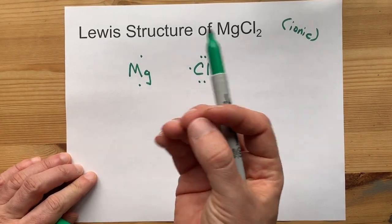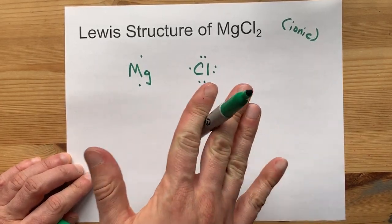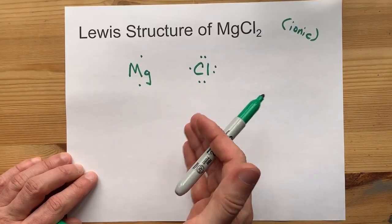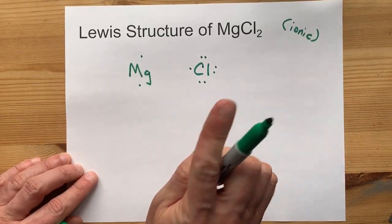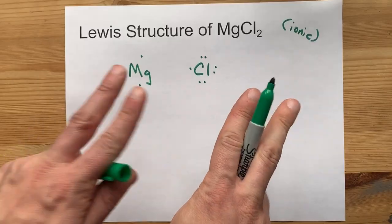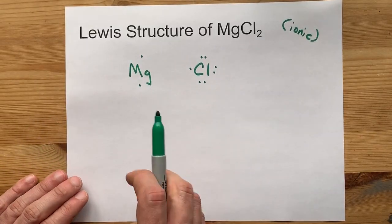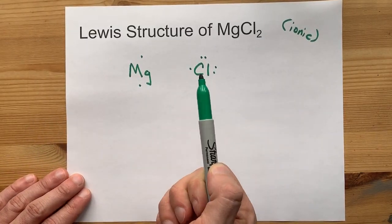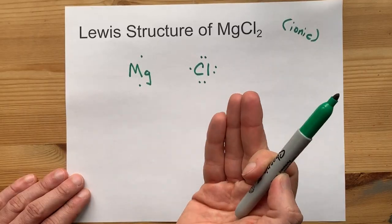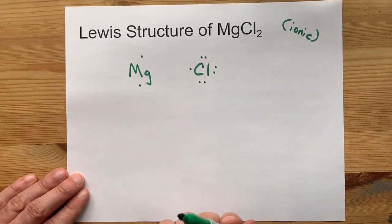Now, non-metals satisfy the octet rule. They want a full outer shell to be stable. A full outer shell of 8 electrons. That's why it's called the octet rule. This chlorine has 7. It's so close, but it needs one more electron to be happy and stable.